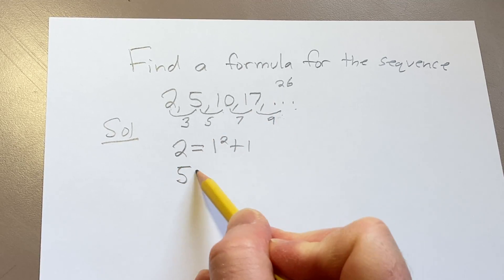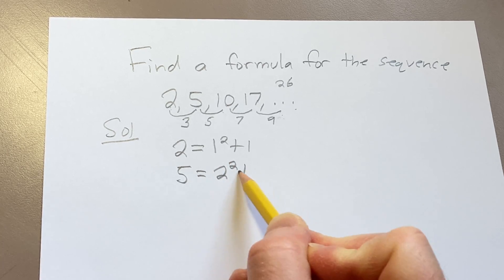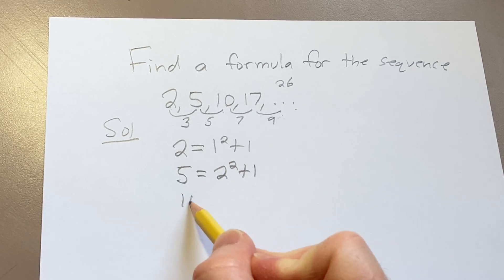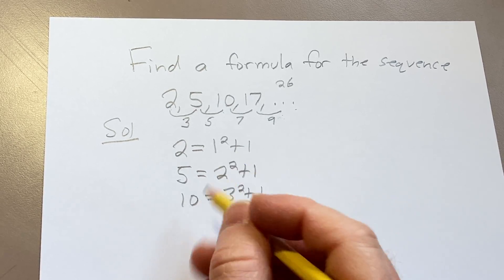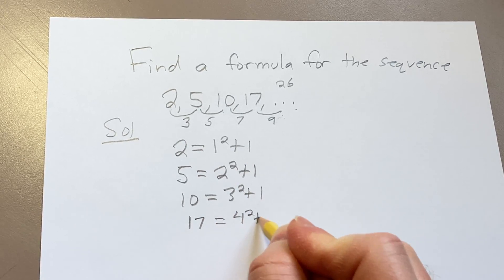5 is equal to 2 squared plus 1. 10 is equal to 3 squared plus 1. And then 17 is equal to 4 squared plus 1.